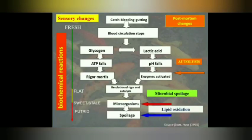A flow chart shows how fish contamination and spoilage progresses. After the fisherman collects the fish, blood circulation stops. Then glycogen and ATP fall, and rigor mortis starts. Lactic acid begins degenerating from the body, pH falls, and enzyme activation starts. This leads back into rigor mortis and autolysis, which then influence different microorganisms and spoilage begins.